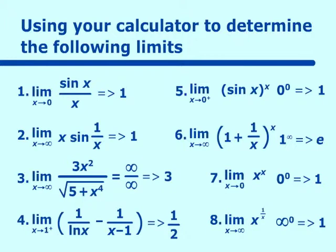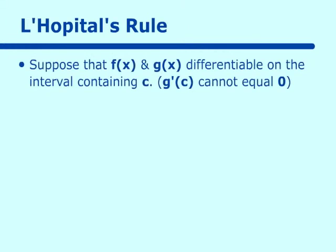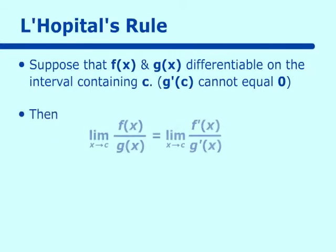All of these are indeterminate forms — whether zero over zero, zero times infinity, or infinity minus infinity — and they allow you to apply L'Hopital's Rule. L'Hopital's Rule states: suppose f(x) and g(x) are differentiable on an interval containing c, and g′(c) ≠ 0. Then the limit as x approaches c of f(x)/g(x) can be evaluated as the limit as x approaches c of f′(x)/g′(x).